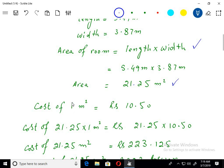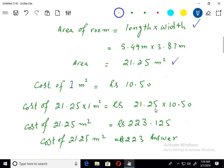Cost of 1 meter square is given as rupees 10.50. We have area as 21.25. So cost of 21.25 meter square, just multiplying both sides of this equation by 21.25.